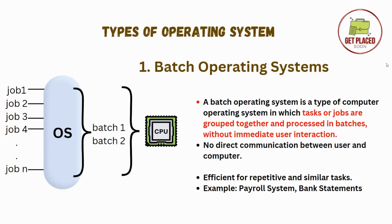Other similar jobs will go into the other batch. After that, the operating system manages their execution by loading each batch onto the CPU for processing. Once the batch is completed, the next batch is automatically initiated.